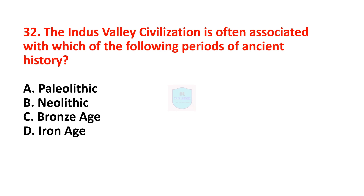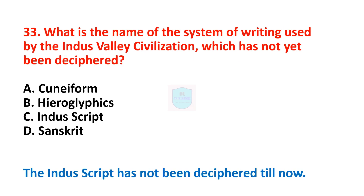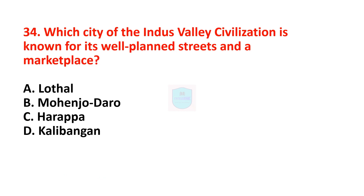Next question: the Indus Valley Civilization is often associated with which period of ancient history? Correct answer is the Bronze Age. Next question: what is the name of the writing system used by the Indus Valley Civilization which has not been deciphered? The name of the script is Indus script. Next question: which city is known for its well-planned streets and marketplace? Correct answer is Mohenjo-daro.